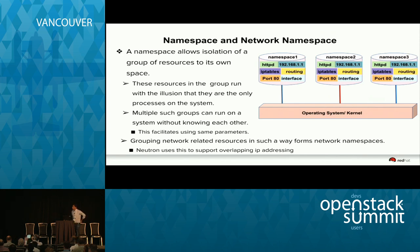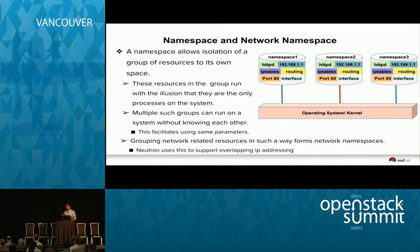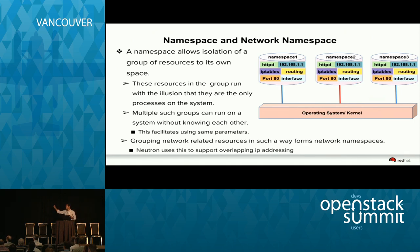A namespace allows isolation of a group of resources to its own space. All processes and resources within that namespace run with the illusion that they are the only processes within the system — they do not know about each other, without creating any conflict, while still using the same parameters like IP address, port number, and sockets. For example, three namespaces can each run HTTP processes listening on the same IP address, same port number, same interface names, and serve different websites. Grouping network-related resources in this way forms a network namespace, which Neutron uses extensively when building network topology.